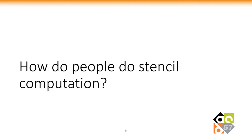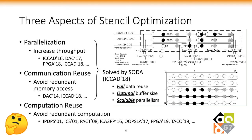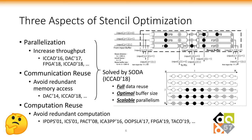Stencil computation may seem simple to you. Let's see how people optimize it. There are mainly three aspects that are important for stencil optimizations: parallelization, communication reuse, and computation reuse. The first two have been optimally solved by the SODA paper, which produces full data reuse with the minimum buffer size and scalable parallelism. However, the third aspect, computation reuse, has not been fully explored.